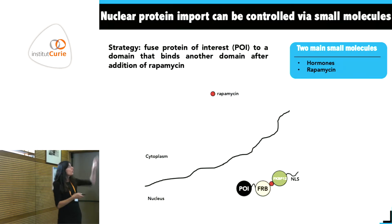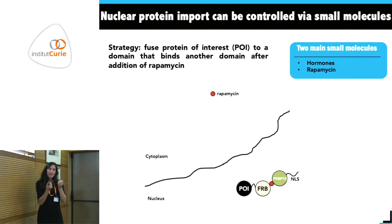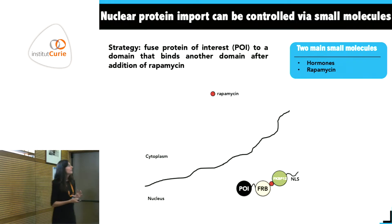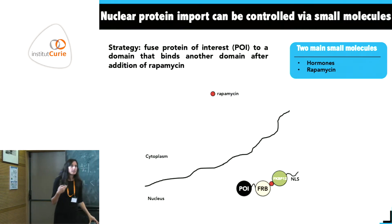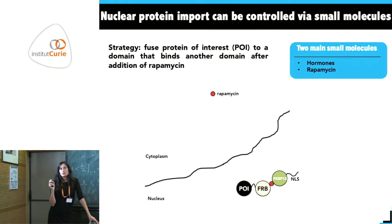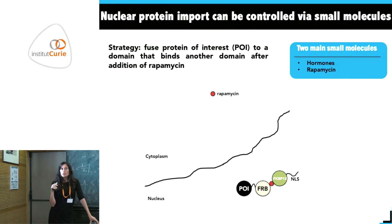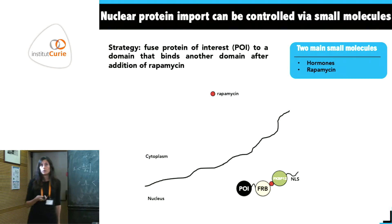In this case you simply retain the protein of interest inside the nucleus via this interaction. The drawback is that you have to give either the small molecule or the hormone into the medium, where it diffuses everywhere — so you don't have high spatial resolution, and temporal resolution is also limited since it takes time for the molecule to diffuse inside.